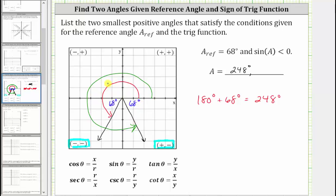Because the terminal side is in quadrant four to determine the measure of this angle, we would take 360 degrees and subtract the reference angle of 68 degrees. 360 degrees minus 68 degrees equals 292 degrees.